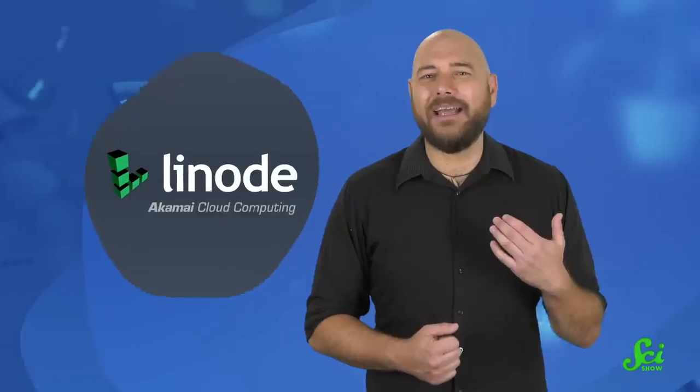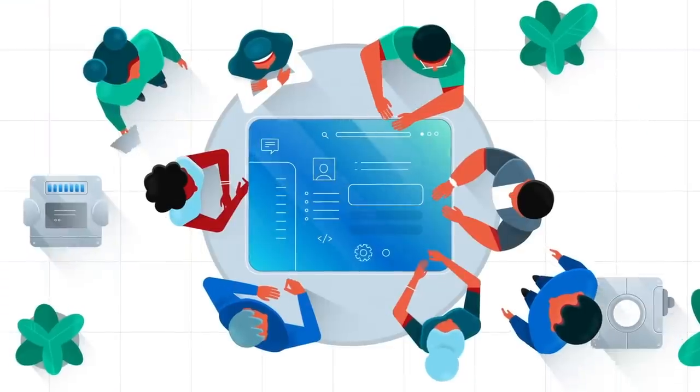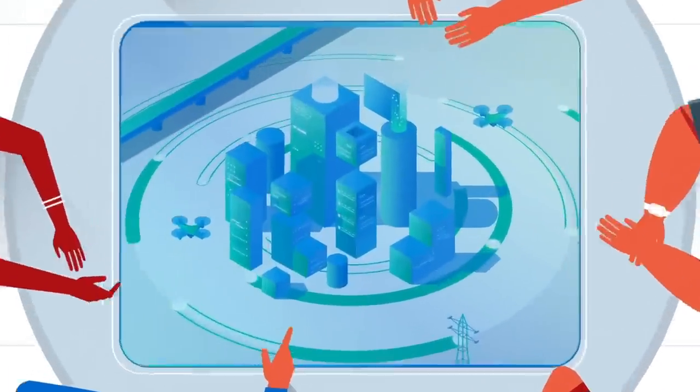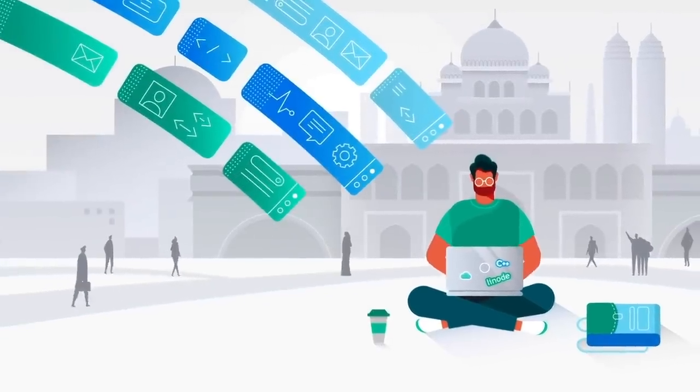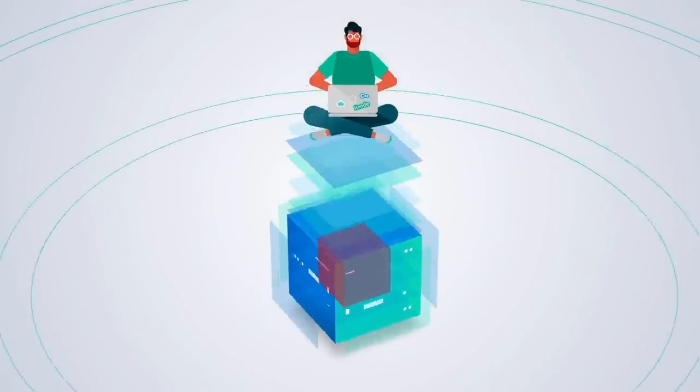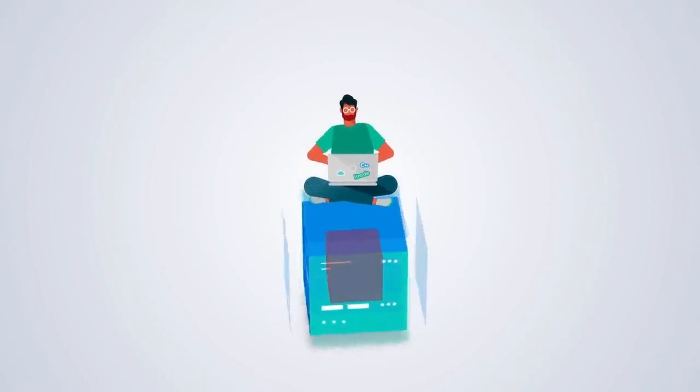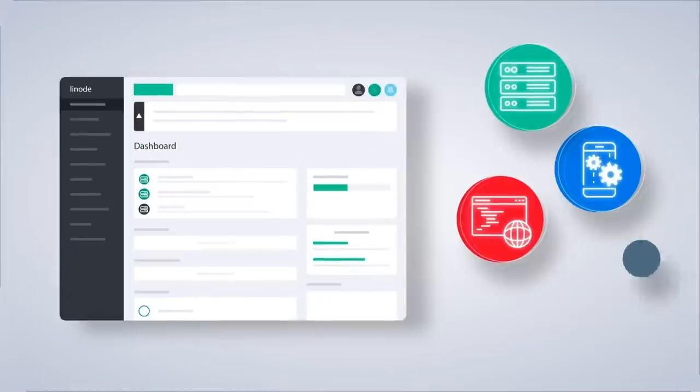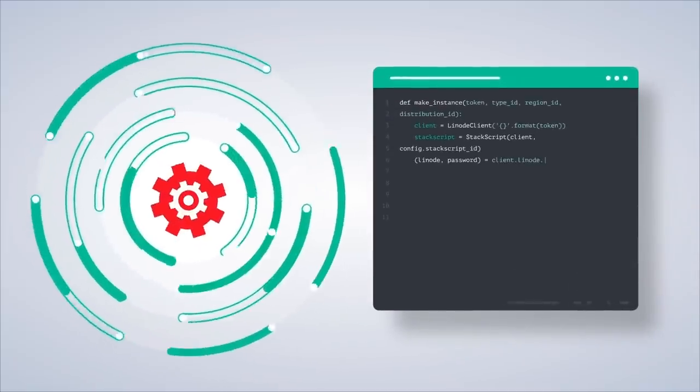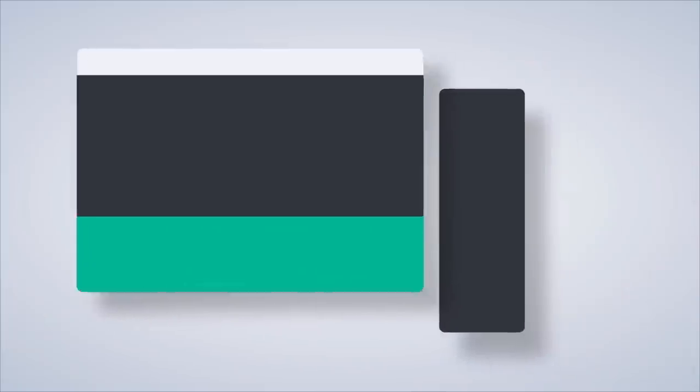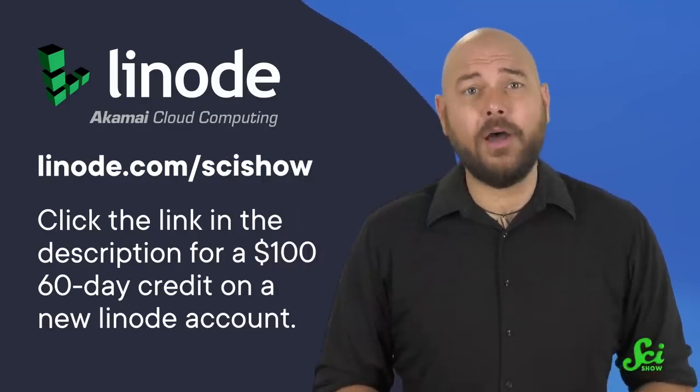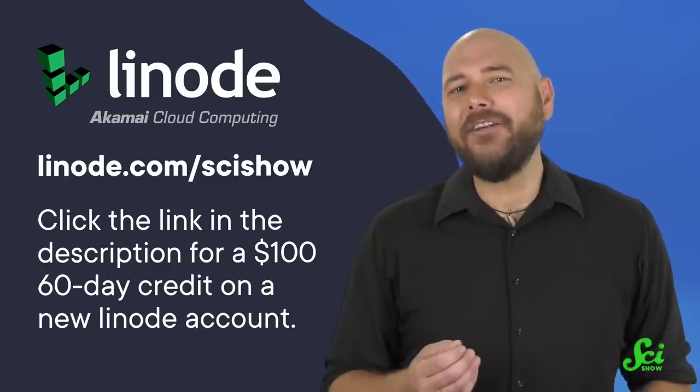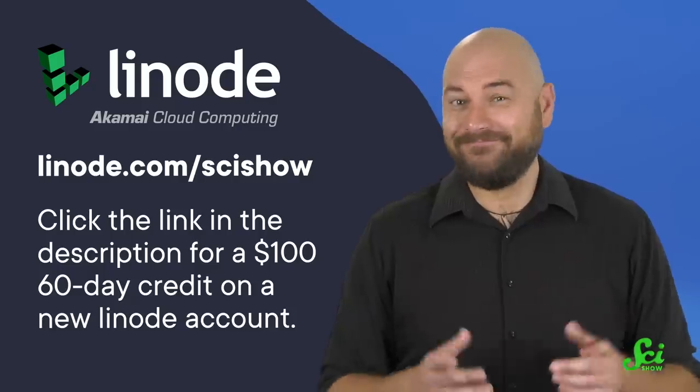This SciShow video, that you're probably watching thanks to cloud computing technology, is supported by Linode, a cloud computing company from Akamai. Linode provides access to some of your favorite internet services, from streaming videos to storing files. And they keep it all running with data centers across the world. The Akamai Global Network reaches over 4,100 locations in 135 countries. And by the end of 2023, they're adding even more sites. So odds are good that they've got a site that can work for you. If you want to make sure that Linode has your back in a remote area, you can run a speed test by connecting with one of Linode's international facilities, all before any commitment. Then you can get going with those brand new servers by clicking the link in the description below, or heading to linode.com/scishow for a $100 60-day credit on a new Linode account. Thanks for watching.